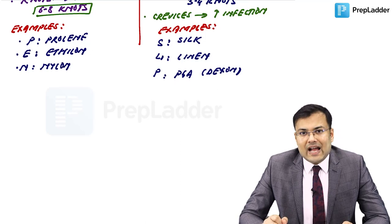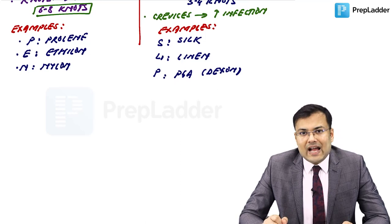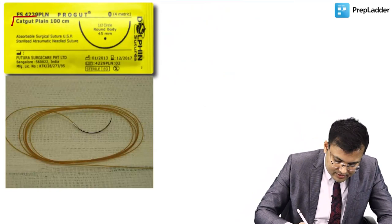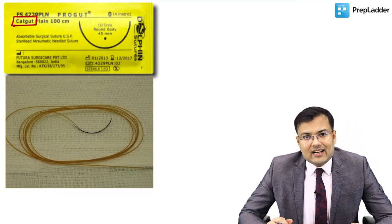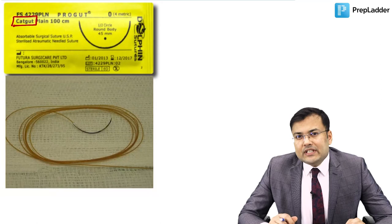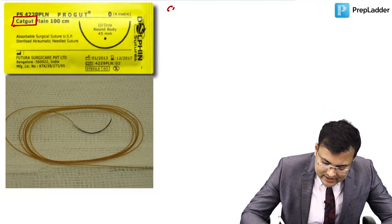Catgut is not made from cat gut — it is made from sheep gut, specifically the submucosa of the sheep's ileum. It was discovered by John Hunter. It is a natural absorbable suture stored in a preservative solution — isopropyl alcohol — to prevent degradation by bacteria. This is a frequently asked question.